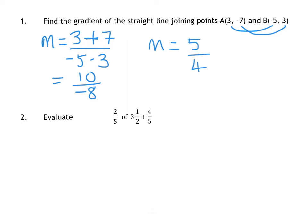The negative can either stay in the bottom or you can put it in the front or you can bring it to the top. Either way, it's negative 5 over 4 for your gradient.